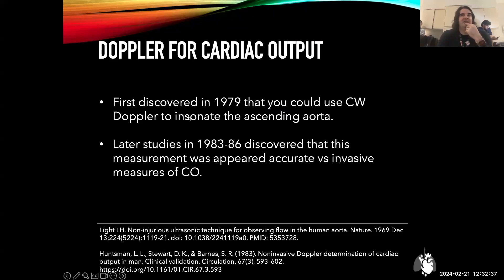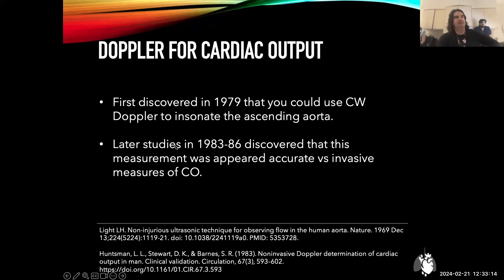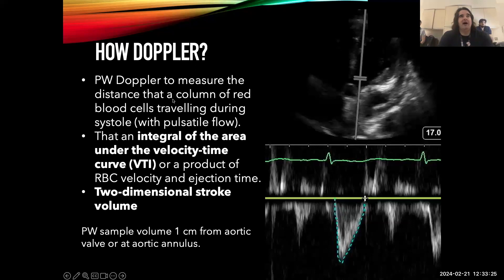In 1979, a scientist discovered you could use Doppler to interrogate the ascending aorta from the suprasternal notch position — pointing the Doppler and seeing an upstroke waveform that was actually the output from the ascending aorta. Interestingly, it was many years later — about 15 to 16 years — before people started saying maybe we should use this to calculate cardiac output. People then began experimenting with the right parasternal window, suprasternal notch view, asking whether the output was reliable compared to the standard of Swan-Ganz and transpulmonary thermodilution methods.